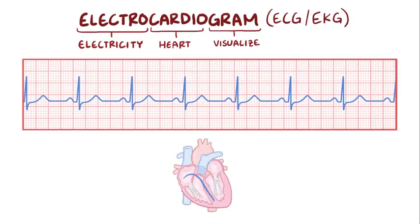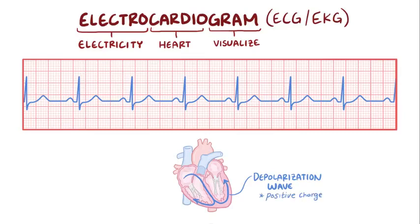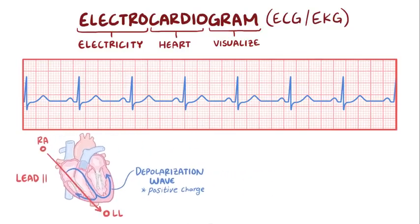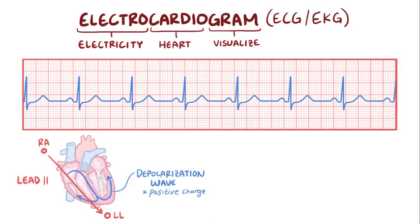An ECG tracing specifically shows how the depolarization wave moves during each heartbeat, which is a wave of positive charge. The way it looks depends on the set of electrodes you're using. This particular set of electrodes is called lead 2, for example, with one electrode on the right arm and the other on the left leg. When the wave's moving toward the left leg electrode, you get a positive deflection, like this big positive deflection corresponding to the wave moving down into the left and right ventricles.